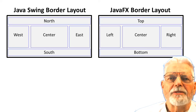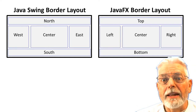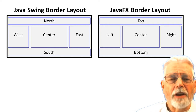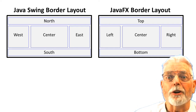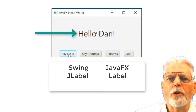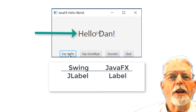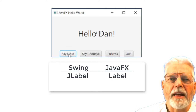Both GUI systems have something called the border layout. Swing calls the border layout areas north, south, east, west, and center. JavaFX is really different — JavaFX calls the areas top, bottom, right, left, and center. The label control used to display the message in the middle of the screen is called JLabel in Swing and it is just called Label in FX.